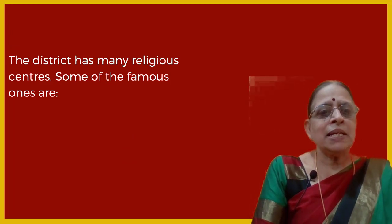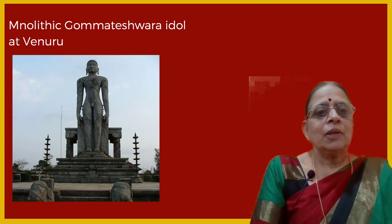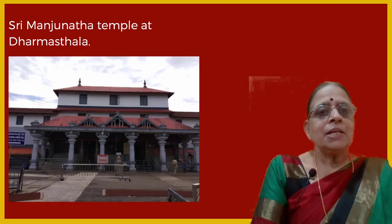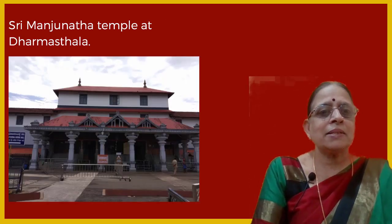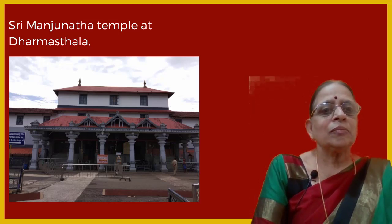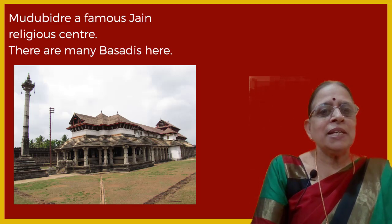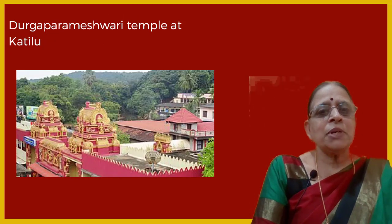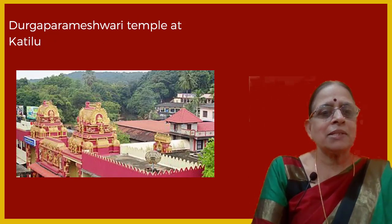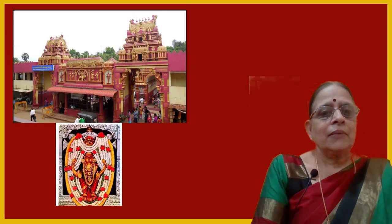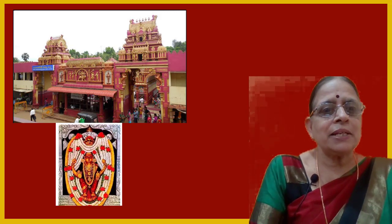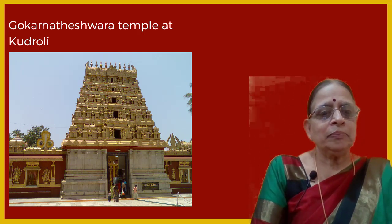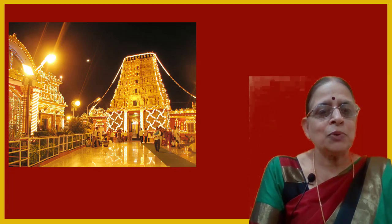The district has many religious centers. Famous ones include the monolithic Gomateshwara idol at Venuru, Shri Manjunatha temple at Dharmasthala — very famous in Karnataka — Moodabidri, a famous Jain religious center with many Basadhis, Durga Parameshwari temple at Kattilu, and Gokarnanatheshwara temple at Kudroli.